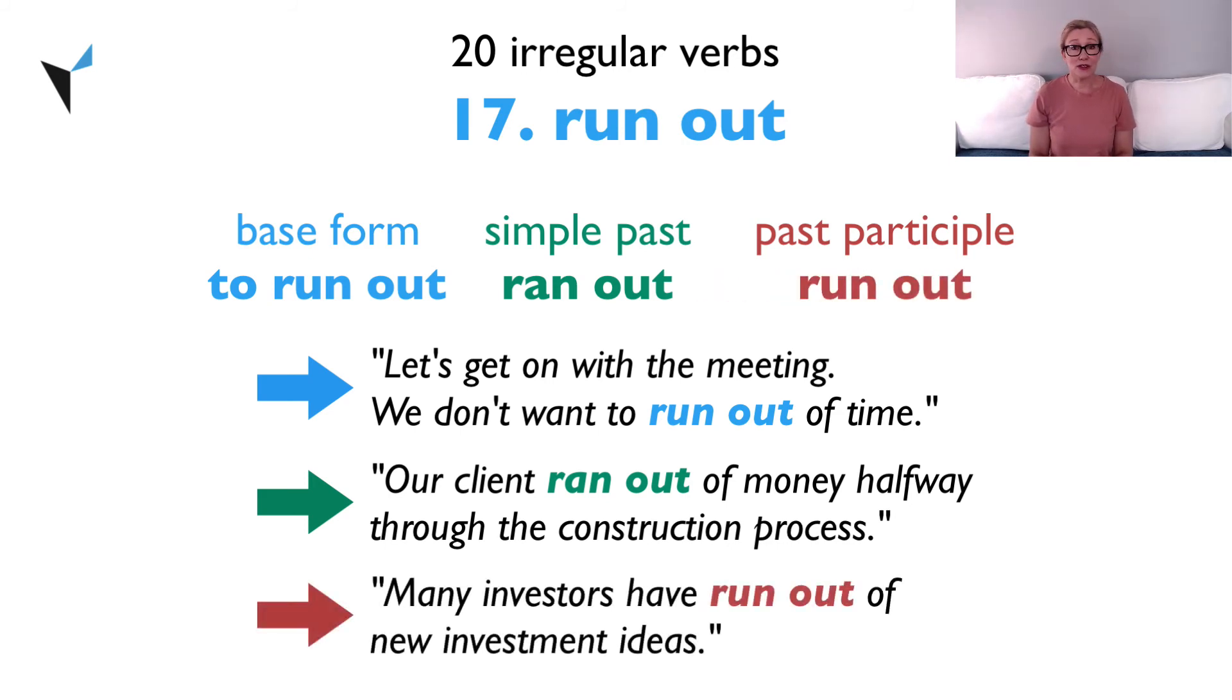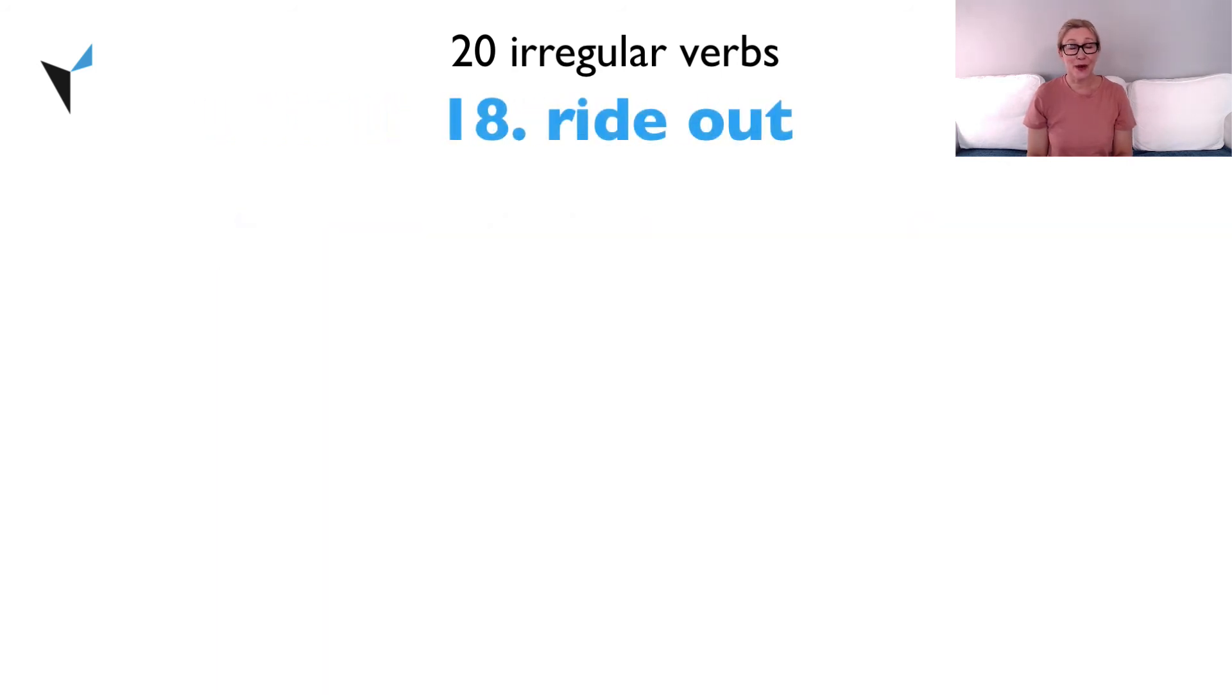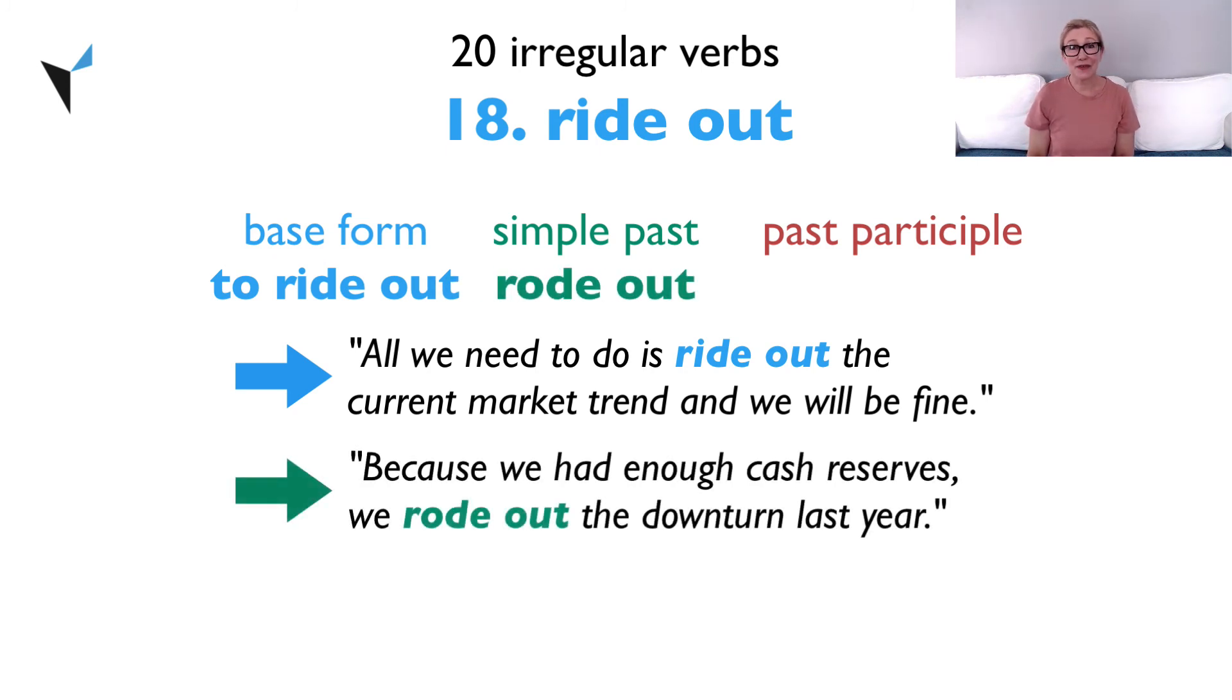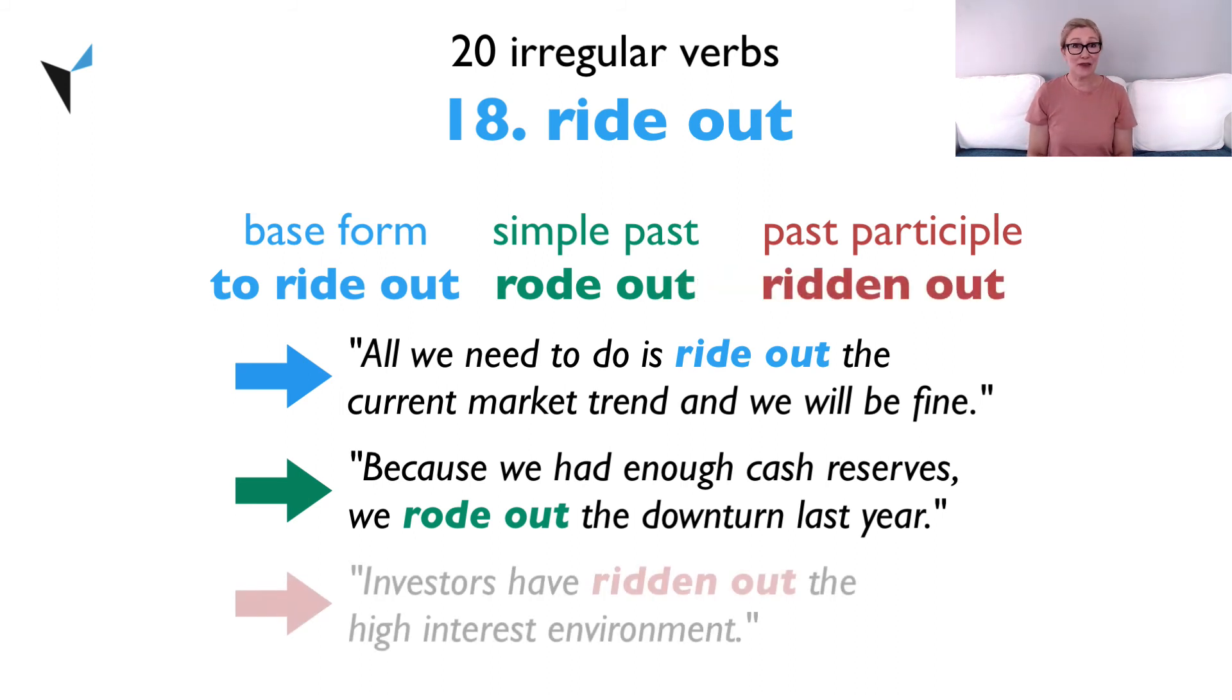Verb 18, ride out. The base form is to ride out. All we need to do is ride out the current market trend and we will be fine. The simple past is rode out. Because we had enough cash reserves, we rode out the downturn last year. And the past participle is ridden out. Investors have ridden out the high interest environment.